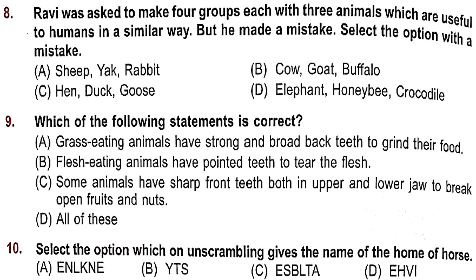Question 8: Ravi made 4 groups of 3 animals each, useful to humans in a similar way, but made a mistake. Option A: sheep, yak, rabbit — wool is obtained from all three. Correct. Option B: cow, goat, buffalo — all give milk. Correct. Option C: hen, duck, goose — we get eggs from all. Correct. Option D: elephant, honeybee, crocodile — elephant and crocodile skin are used for leather, but honeybee gives honey. They are not similar, so Option D is the incorrect group.